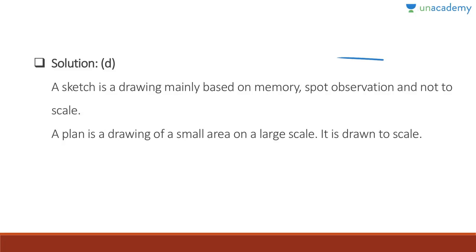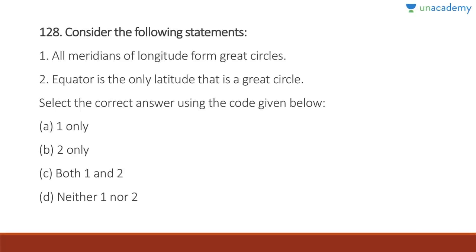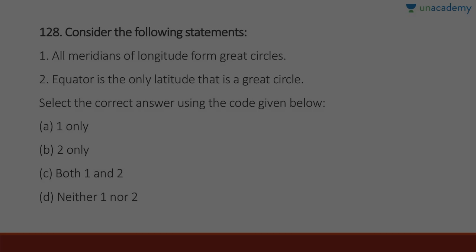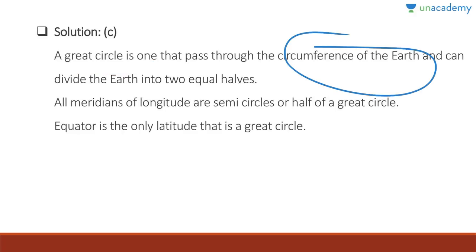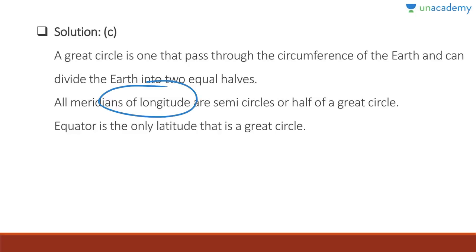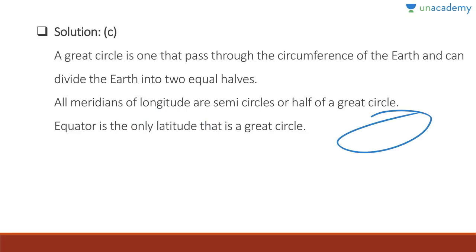Question 128: All meridians of longitude form great circles — absolutely correct. The equator is the only latitude that is a great circle — also correct. Answer is C, both one and two. A great circle passes through the circumference of the Earth and divides it into two equal halves. All meridians are semicircles or half of a great circle. The equator is the only latitude that is a great circle; all others are smaller circles.